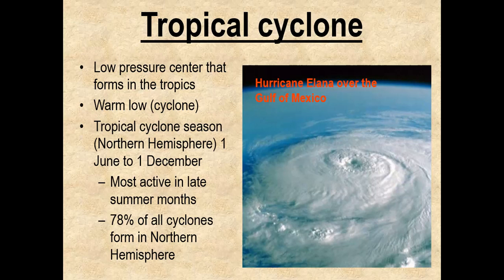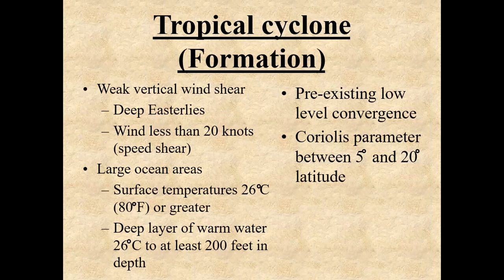What do we need for tropical cyclone formation? First, we prefer weak vertical wind shear — deep easterly winds where winds blow from the same direction over a great vertical distance, with wind speeds less than 20 knots. We do not want a lot of change in wind speed or direction as we go up in the atmosphere. Because if you have stronger winds, that's going to rip apart thunderstorm tops and not allow those thunderstorms to get organized.